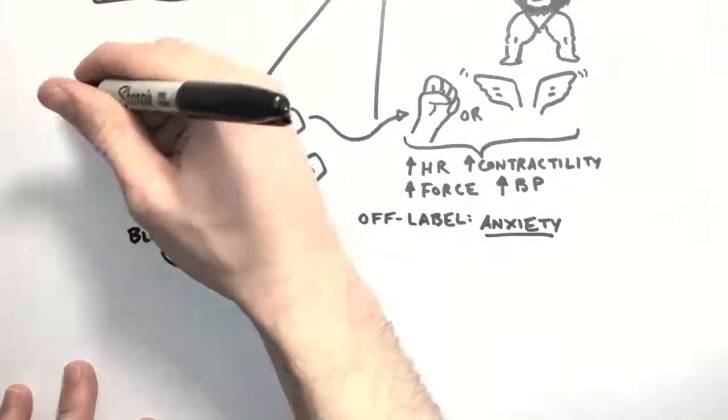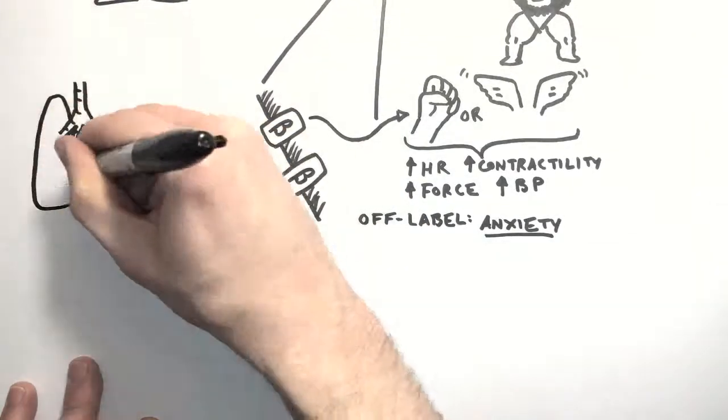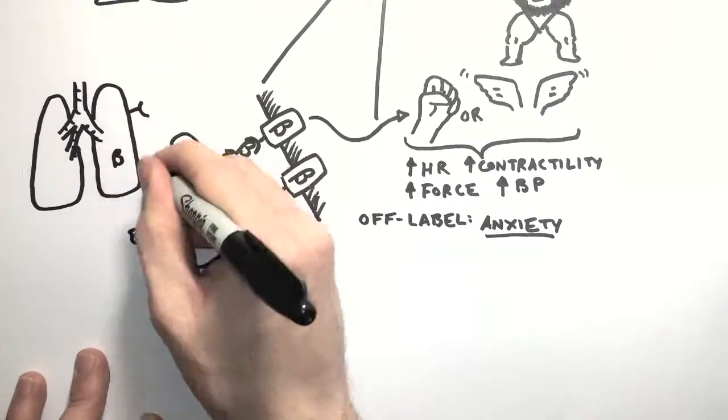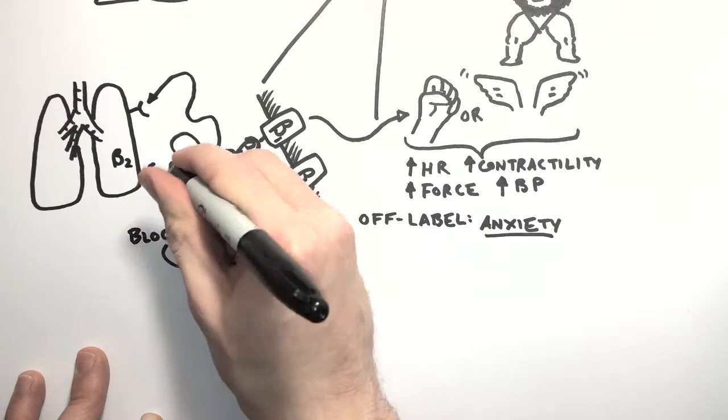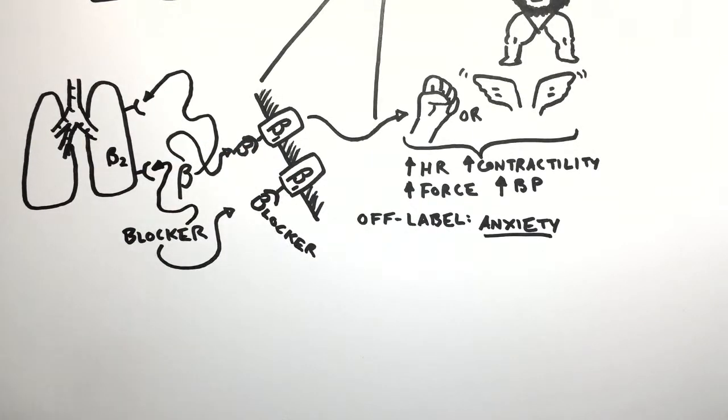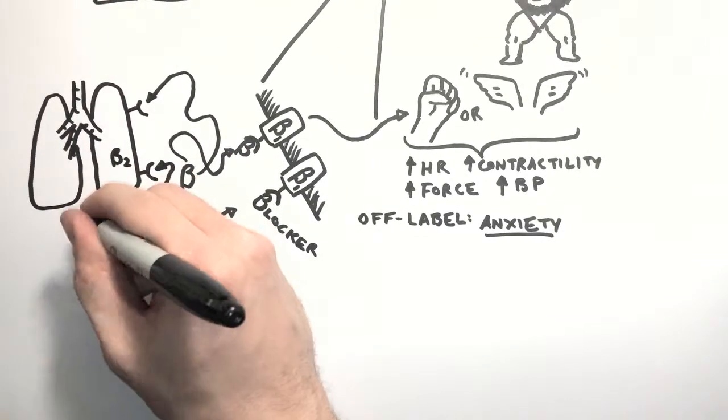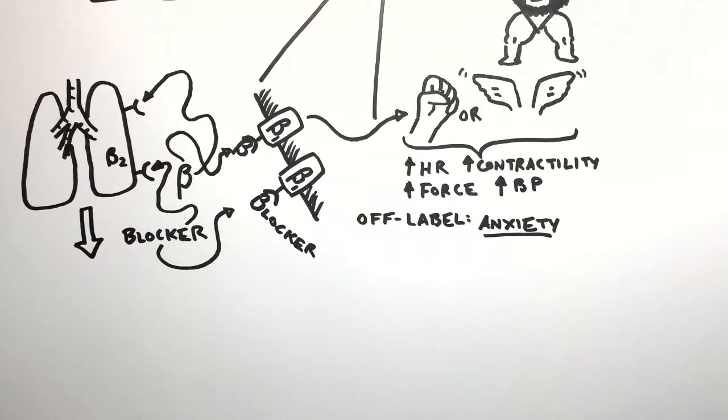Beta receptors are also present in other areas of the body. Some are beta-1 receptors, some are beta-2 receptors. Some drugs, like propranolol, block both kinds of receptors. However, blocking the beta-2 receptors in the lungs could prevent bronchial relaxation and cause respiratory depression.